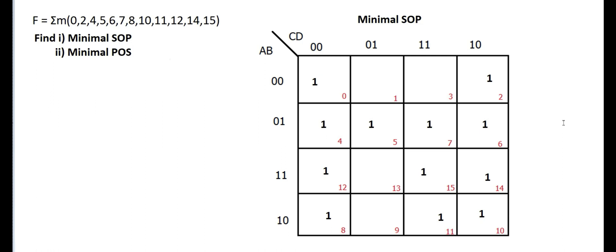Now I have to group. We already know the grouping of cells. There are five thumb rules: adjacent cells can be grouped, opposite edges, all corners or adjacent corners, and fifth — don't care helps. These thumb rules I have already explained in a previous video, you can watch that also.